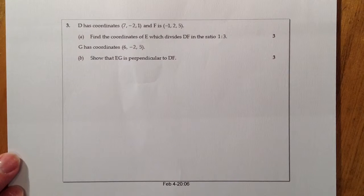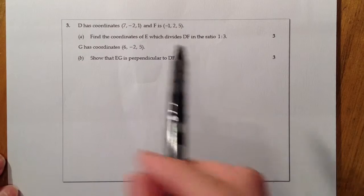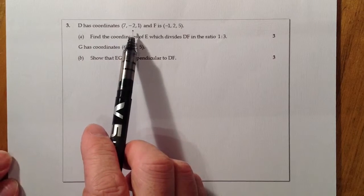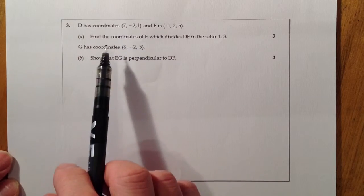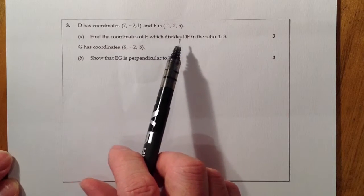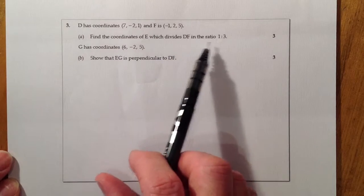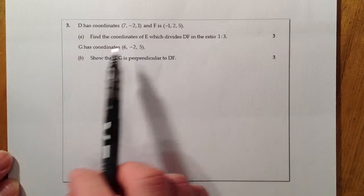This is higher homework practice paper B, question 3 in the calculator paper. We have a vector question where D has coordinates (7, -2, 1) and F is (-1, 2, 5). Find the coordinates of E which divides DF in the ratio 1:3.